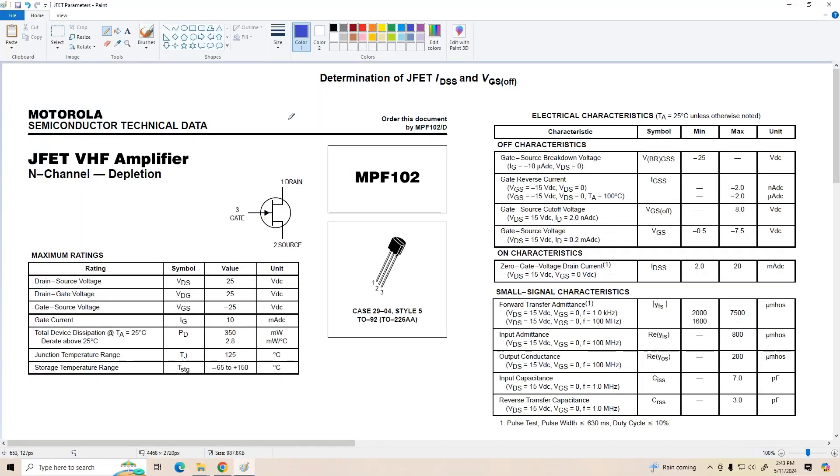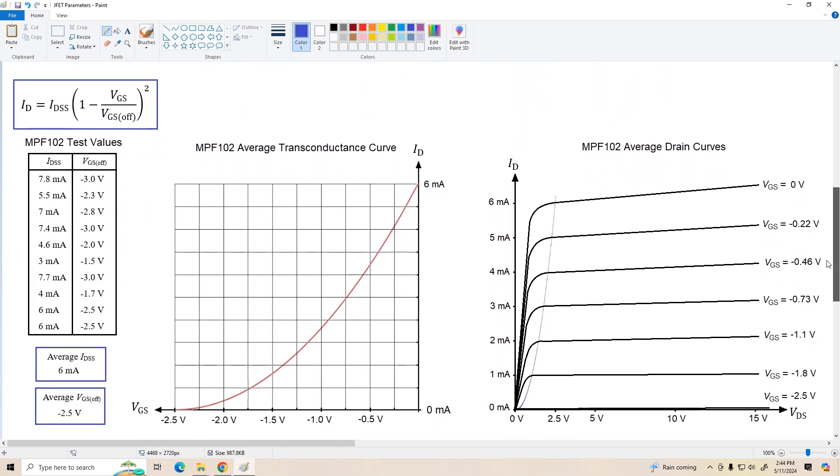Okay, I'm back. And it's been less than a second in YouTube time, but significantly longer in my time. But I compiled all of the data for the FETs and plotted some curves. And this is what I came up with. All right. If we look at the test values first, the maximum IDSS I got was 7.8 milliamps with a corresponding VGS-OFF of negative 3 volts. The lowest IDSS I measured was 3 milliamps and that FET had a VGS-OFF of negative 1.5 volts. So I averaged my IDSS values and came up with 6 milliamps. The average VGS-OFF value was negative 2.5 volts. So I plotted that transconductance curve here.